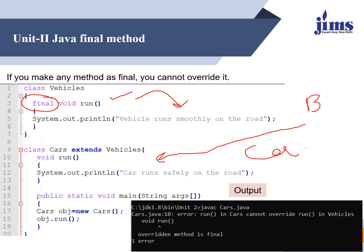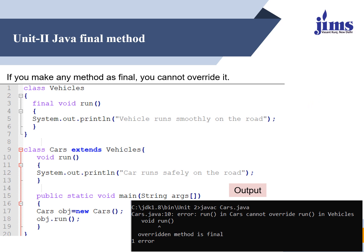Here I am trying to override the function run. Due to inheritance, the derived class has a copy of all properties and methods from the base class, so run is also part of the Car class. Here I am saying "cars runs safely on the road." In the main, I make the object of the derived class and try to call the member function run — but it says it cannot be overridden because run is a final method.